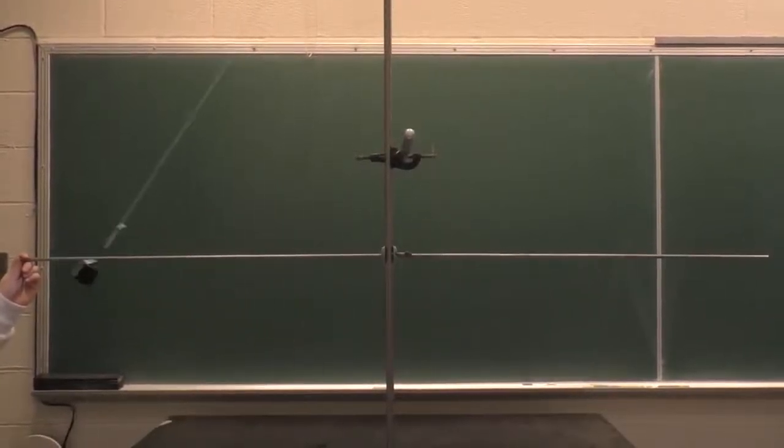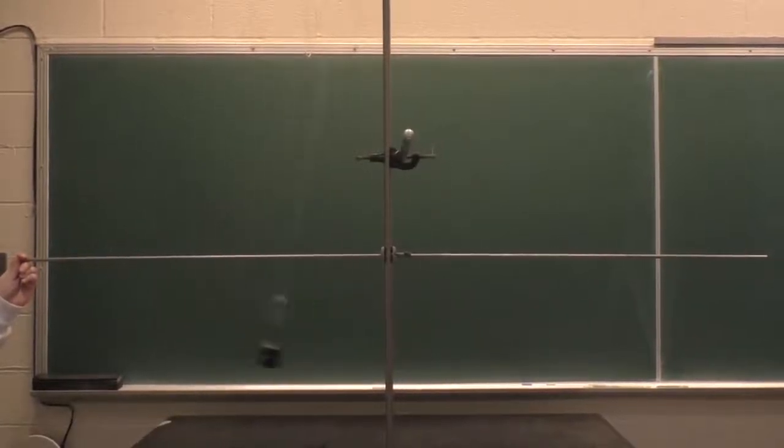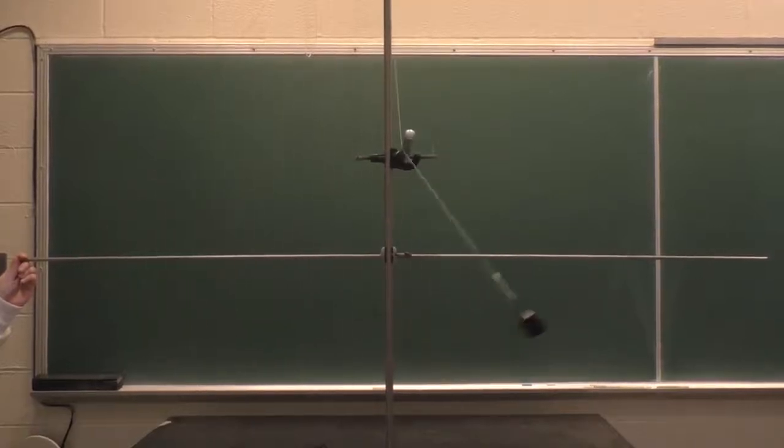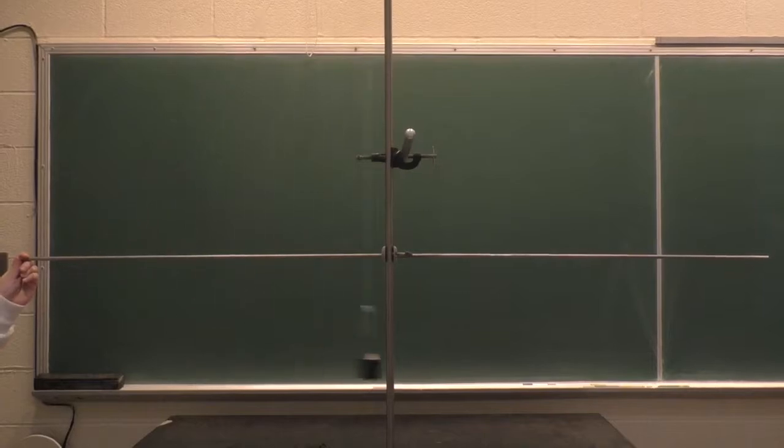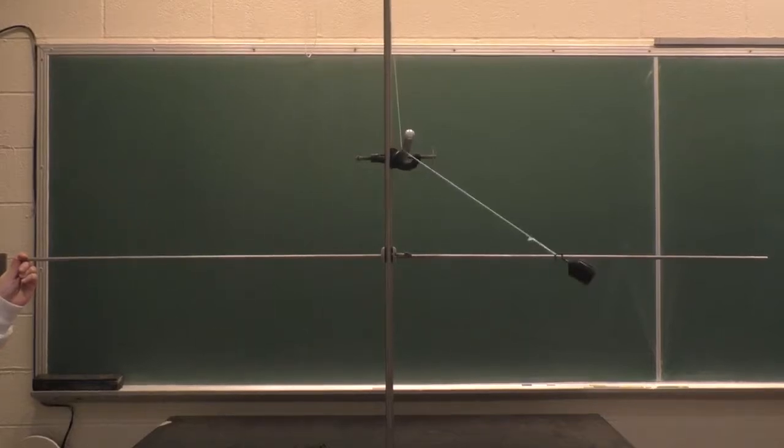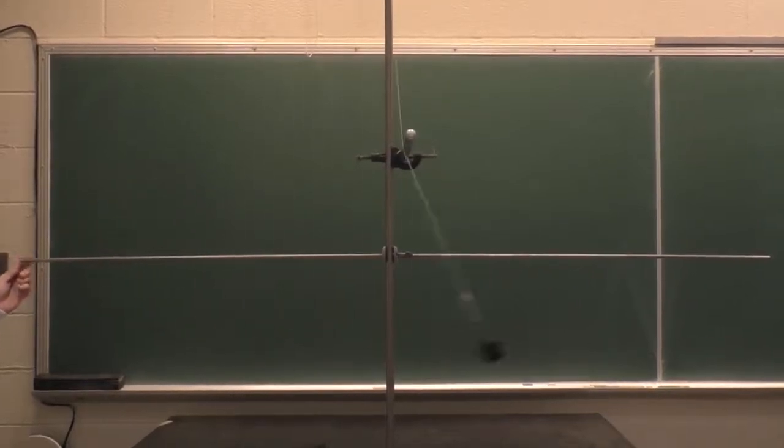And you can see it once again goes to the same height because whether interrupted or not, it is a question of potential energy. Its potential energy at this point is going to be the same as the potential energy at that point, and that means it has to go up to the same height.